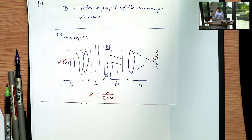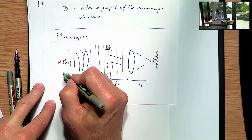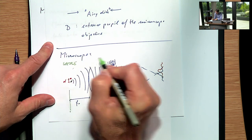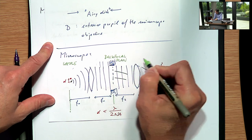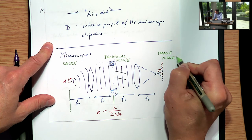Finally, these planes have special relationships: the sample plane and the back focal plane of the objective are Fourier planes to one another; the back focal plane and the image plane are also Fourier planes to one another. By contrast, the sample plane and the image plane are called conjugate planes, meaning they contain similar (image) information.